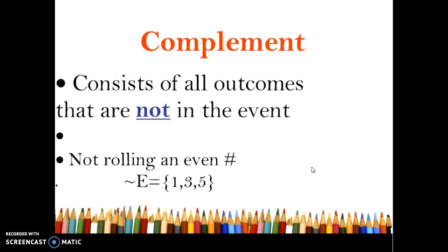The complement is all the outcomes that are not in the event. So not rolling an even number, which the even numbers are 2, 4, and 6. So not rolling an even number leaves you with 1, 3, and 5. It's not always the opposite. In this case if it's not even that means it's got to be odd, but it's not always the opposite. It's just not whatever the event is.